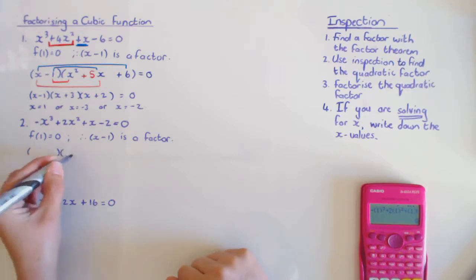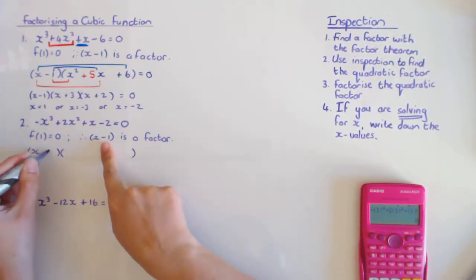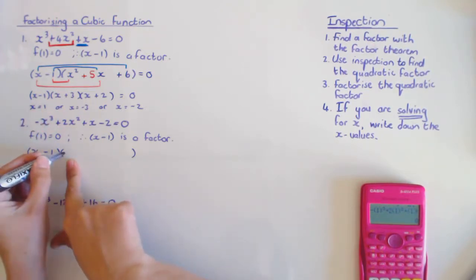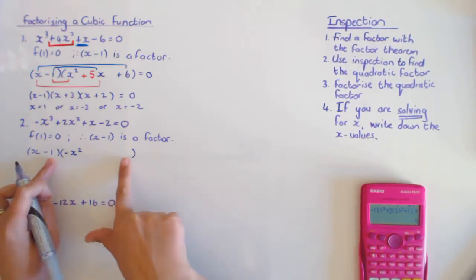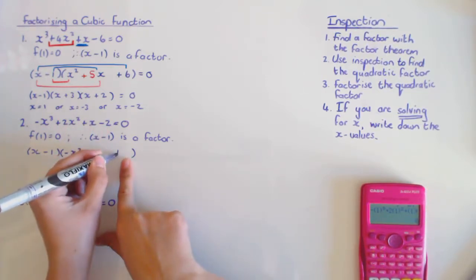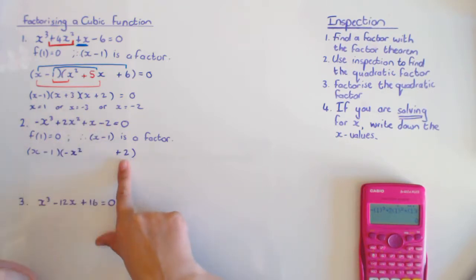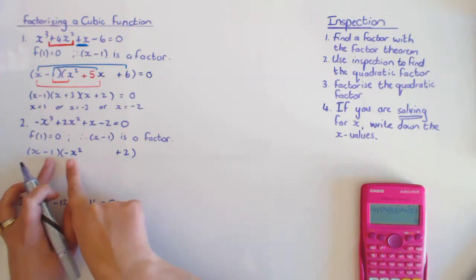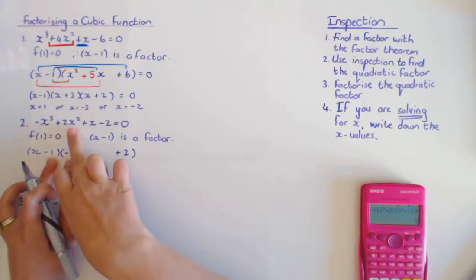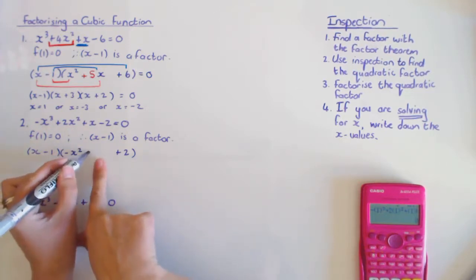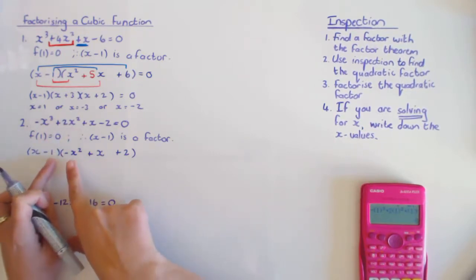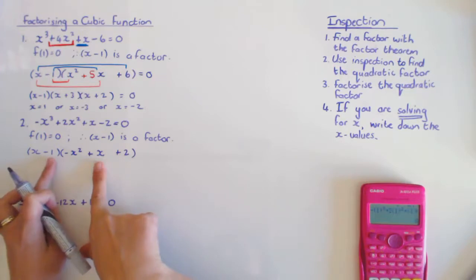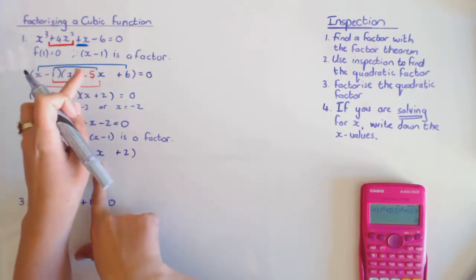So my factorizing looks like: x minus one times a quadratic bracket. Since x times negative x squared gives negative x cubed, the leading term of the quadratic must be negative x squared. Minus one times positive two gives negative two, confirming the constant. For the middle term: there is a positive x squared from one source, and I need another positive x squared to make two x squared total. Two x minus x gives the one x term.